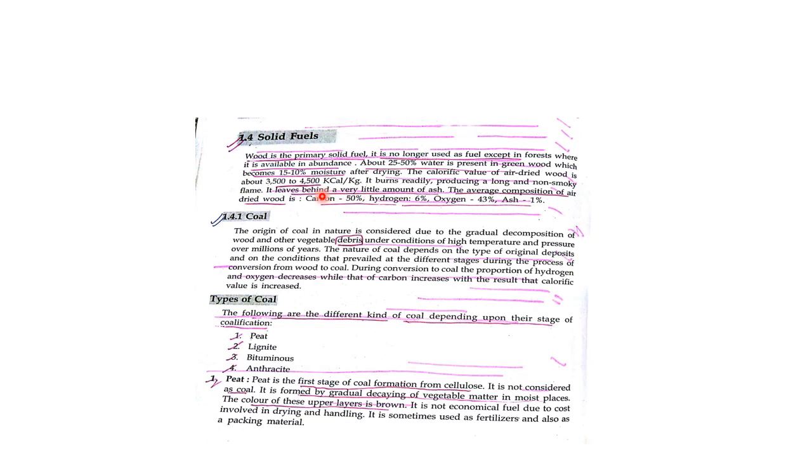Now we discuss solid fuel as a new topic. Solid fuel means coal and wood. The advantages of solid fuel: easily available and cheap. The disadvantages: low thermal efficiency, cannot be used in an IC engine, produces ash after burning, transportation is very difficult, and more space is required for storage.